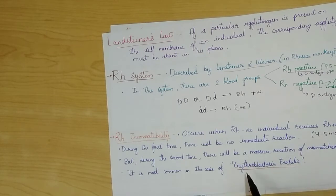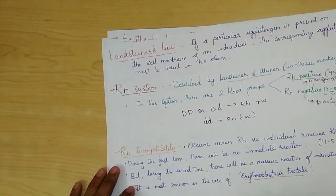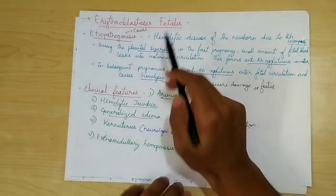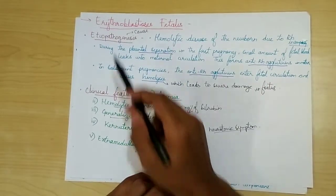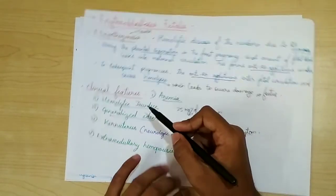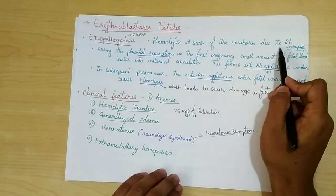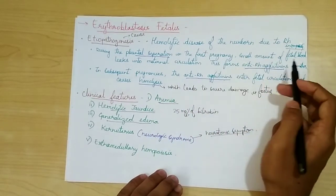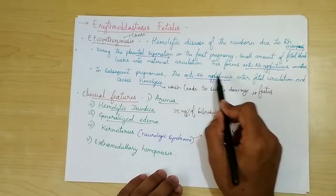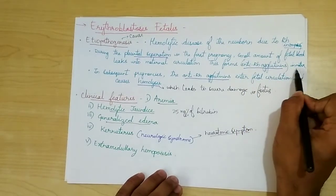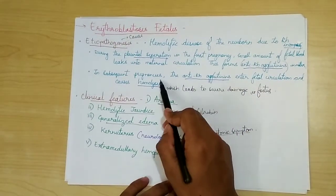The most common example of RH incompatibility is in pregnancy, also called erythroblastosis fetalis. The etiopathogenesis: this hemolytic disease of the newborn is due to RH incompatibility. During the first pregnancy, a small amount of fetal blood leaks into the maternal circulation, stimulating the formation of anti-RH agglutinins in the mother.